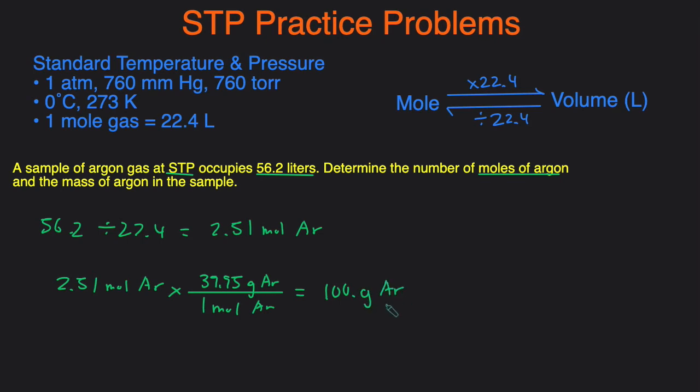And that's it. That's how you would do problems involving STP. So once you've established that you're at STP, either it says STP or it says 1 atm, 0 degrees Celsius, then you can use this shortcut to help you convert between moles and liters.